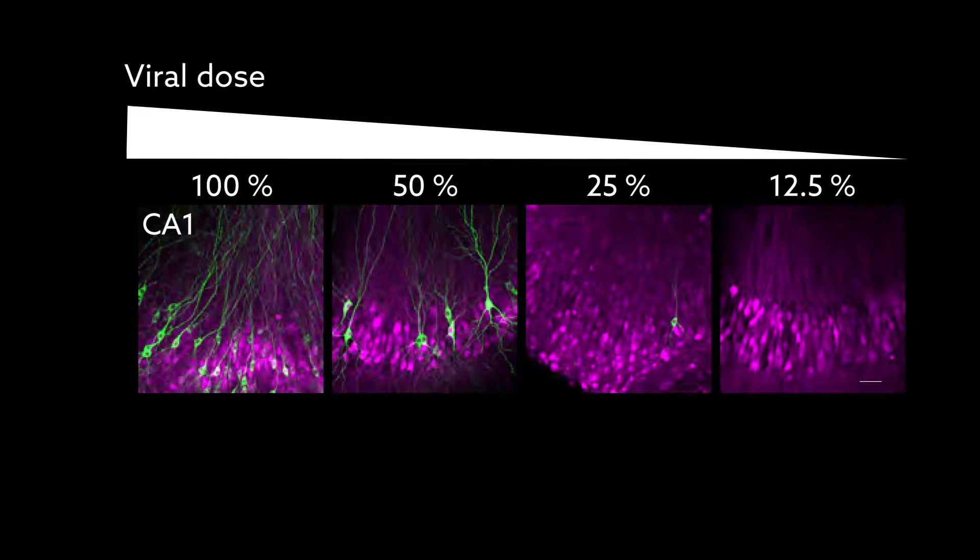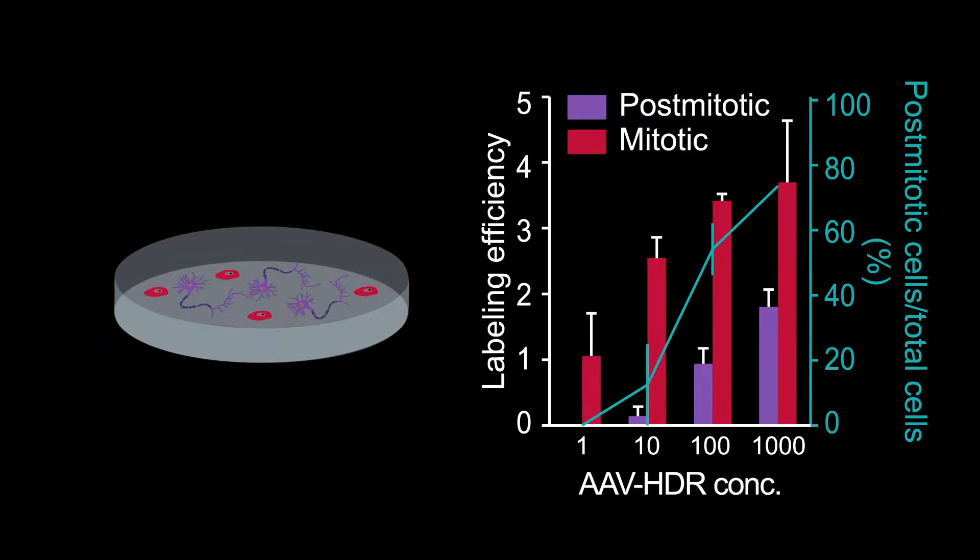To more carefully study this phenomenon, the scientists set up cultures of mitotic and post-mitotic hippocampal cells, and found that post-mitotic cells need about 100 times more virus to get CRISPR to work.